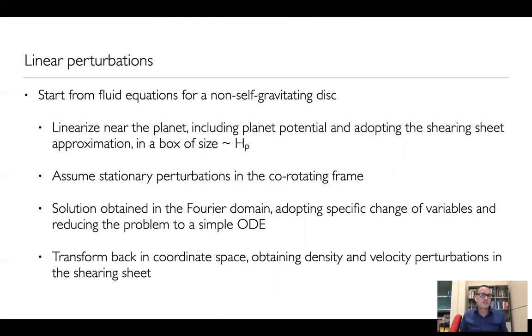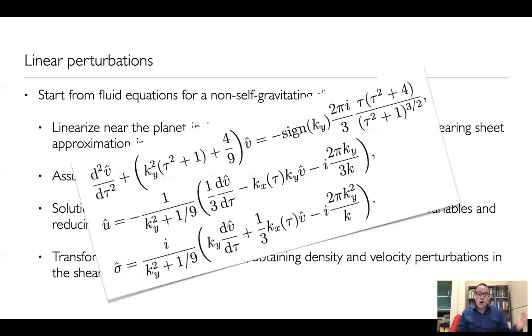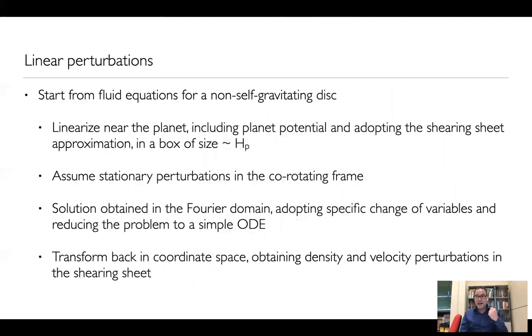For the linear perturbation, we start from the fluid equations for a non-self-gravitating disk. We linearize these equations close to the planet, obviously including the planet potential, and we adopt the shearing-sheet approximation in two dimensions. So we solve the system in a box of size roughly equal to the thickness of the disk at the planet position. We assume that the perturbations are stationary in the corotating frame of the planet. And in order to solve the system of partial differential equations that come out, we move to Fourier space, we adopt specific change of variables, and we reduce the problem to a simple ordinary differential equation for the Fourier transforms of the azimuthal velocity v-hat, of the radial velocity perturbation u-hat, and of the surface density perturbation sigma-hat. So these are the equations that we solve. Once we solve them, we can go back and transform them back into the coordinate space, and we obtain density and velocity perturbations in the shearing sheet.